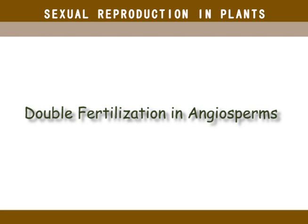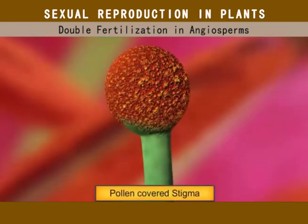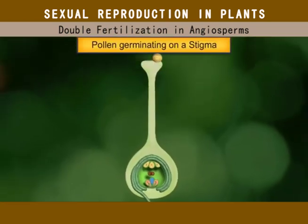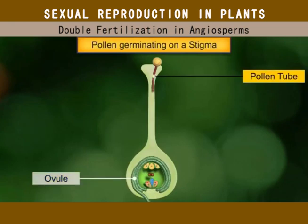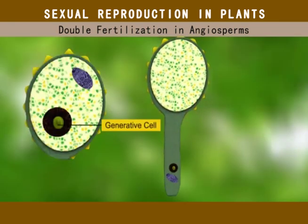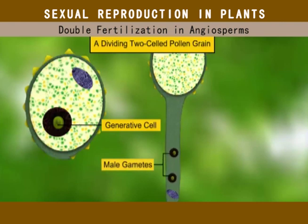Let's talk about double fertilization in angiosperms. Pollination delivers the pollen grains from the anthers to the stigma. If the pollen grain is of the right type, the stigma induces it to germinate and produces a pollen tube. When the pollen tube starts growing through the stigma and moving towards the ovary, the generative cell divides mitotically to produce two male gametes.